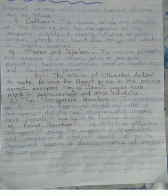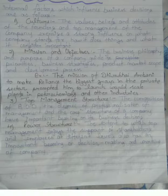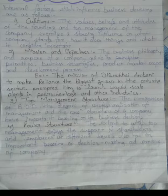The third one is the top management structure. The composition of the Board of Directors, the degree of professionalization — this is the top management structure. Our management structure includes the manager, director, BOD, foremen, and workers. This is the top management structure.